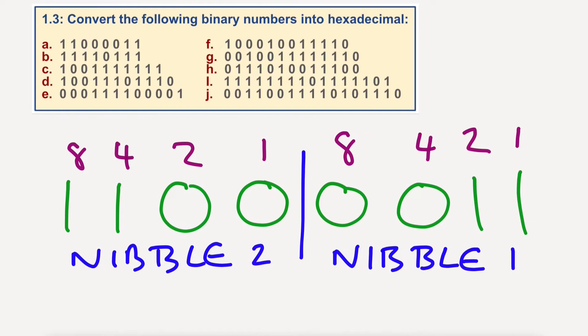So here, the maximum number we can have is 15. Anything greater would be 16 or more. So 1, 1, 1, 1 would equal 15. But we have got on this side, here's another colour, we've got the number 3, 2 plus 1, no 8s, no 4s. And on this side, we have 8 plus 4, which equals 12.